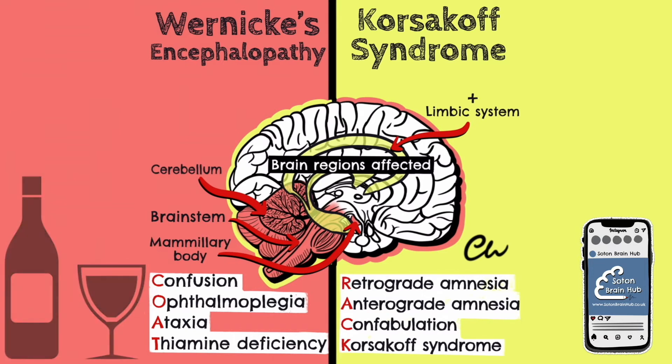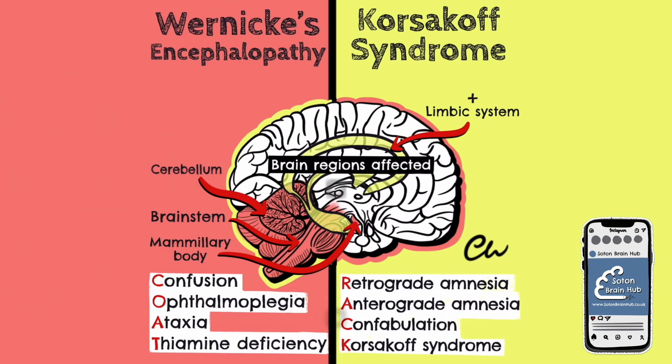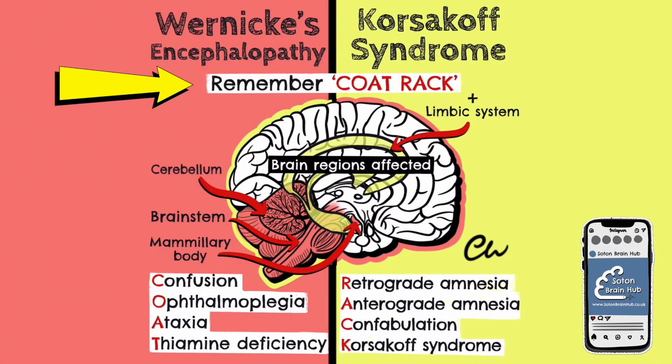You can remember the clinical features of Wernicke-Korsakoff disease using the combined medical mnemonic COAT RAC. In summary, Wernicke-Korsakoff syndrome is a brain disorder due to thiamine deficiency associated with both Wernicke's encephalopathy and Korsakoff syndrome. Wernicke's encephalopathy is characterised by confusion, ataxia, and abnormal eye movements, whilst Korsakoff syndrome is characterised by memory loss and confabulation.